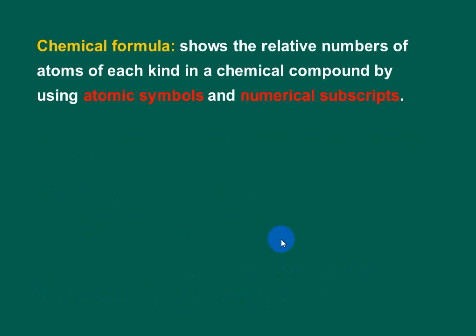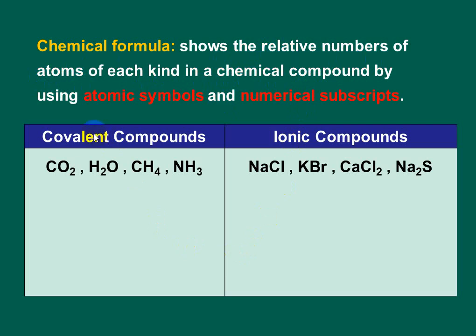What's a chemical formula? A chemical formula is a group of symbols and numerical subscripts. It shows the relative numbers of atoms of each kind in a chemical compound. For example, covalent compounds include carbon dioxide, water, methane gas, and ammonia gas. Ionic compounds include sodium chloride, potassium bromide, calcium chloride, and sodium sulfide.